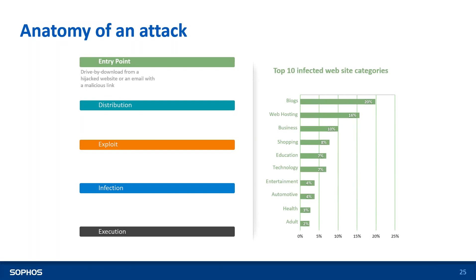The first part of an attack is the Entry Point. It can be either through an invisible drive-by download, maybe through a hijacked site, or through an email containing a malicious link. Most ransomware uses attachments with macros, which has generally been the case.